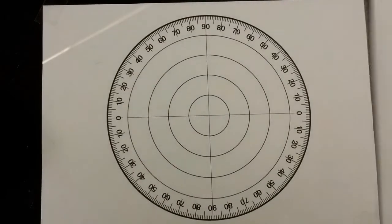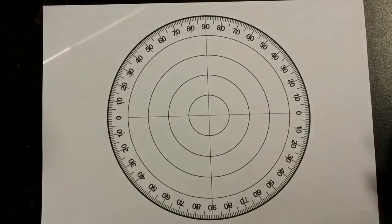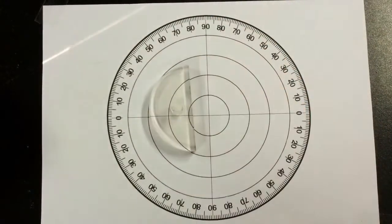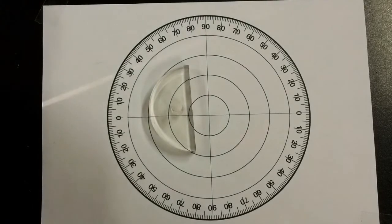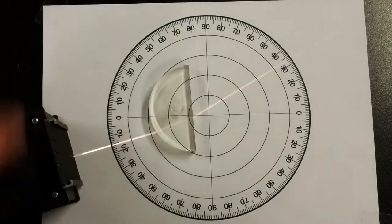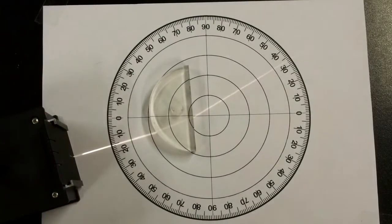So here we have a protractor, paper protractor, and here is our semicircular prism made of perspex and here of course we have our ray box or light box.